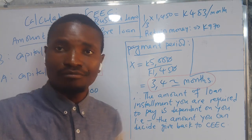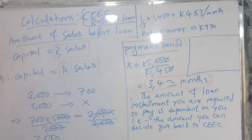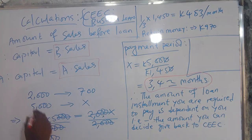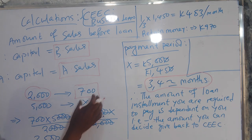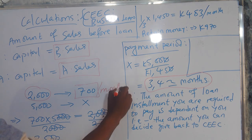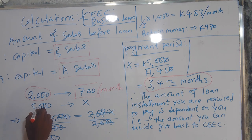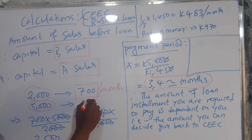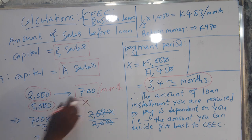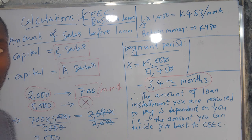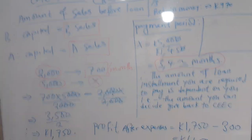Let's say for example you started the business with 2,000 kwacha and you make sales of 700 kwacha per month. You are applying for a capital of 5,000 kwacha, and we don't know how much that will be generating once we inject that 5,000 into our business — so we have an unknown value which we are calling x.